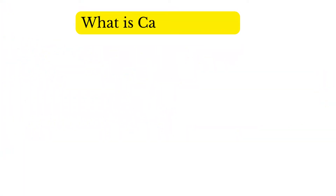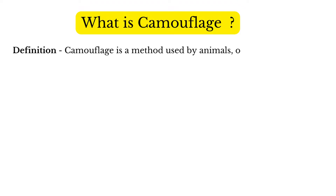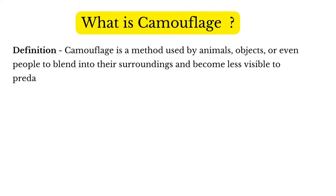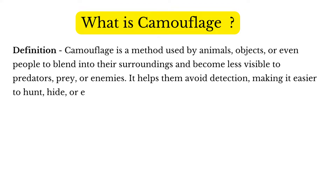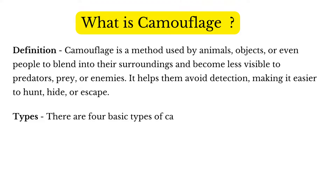What is Camouflage? Camouflage is a method used by animals, objects, or even people to blend into their surroundings and become less visible to predators, prey, or enemies. It helps them avoid detection, making it easier to hunt, hide, or escape.